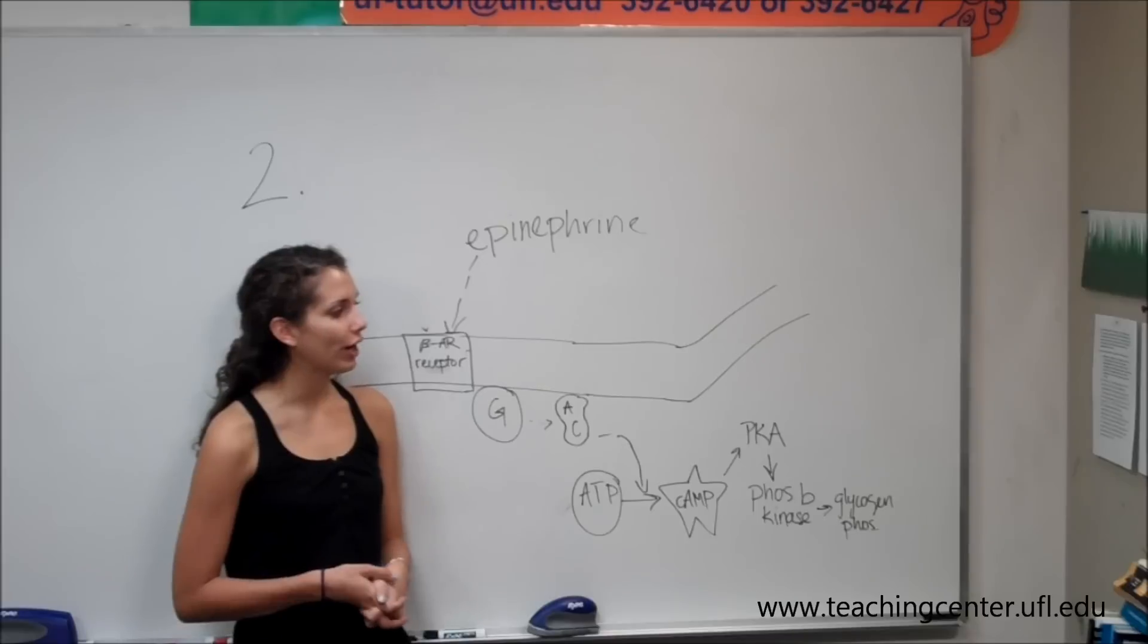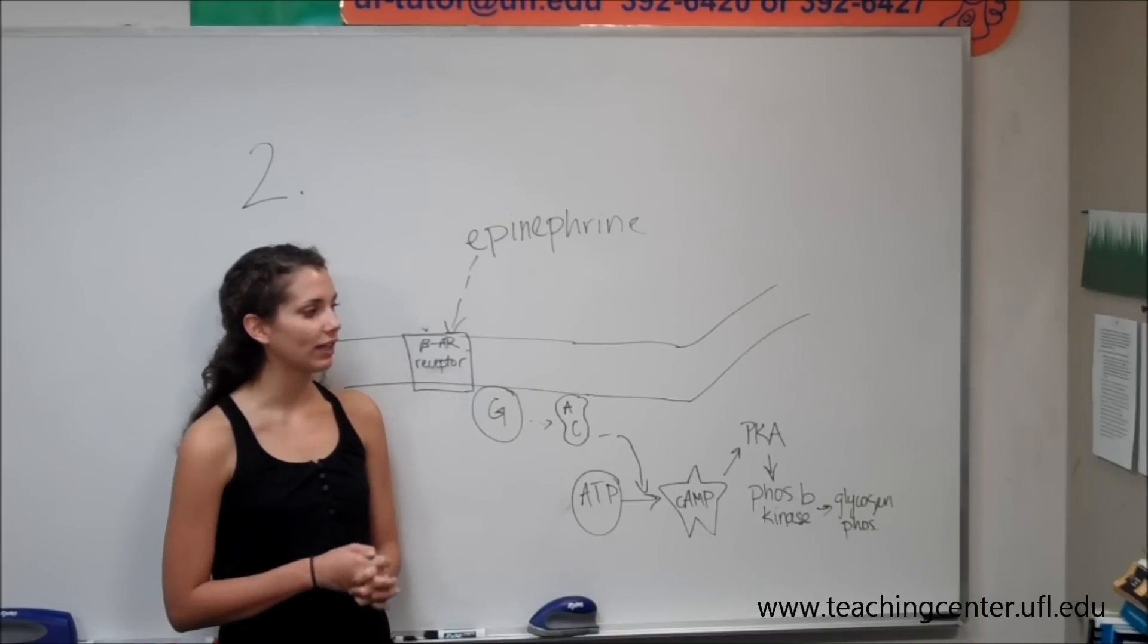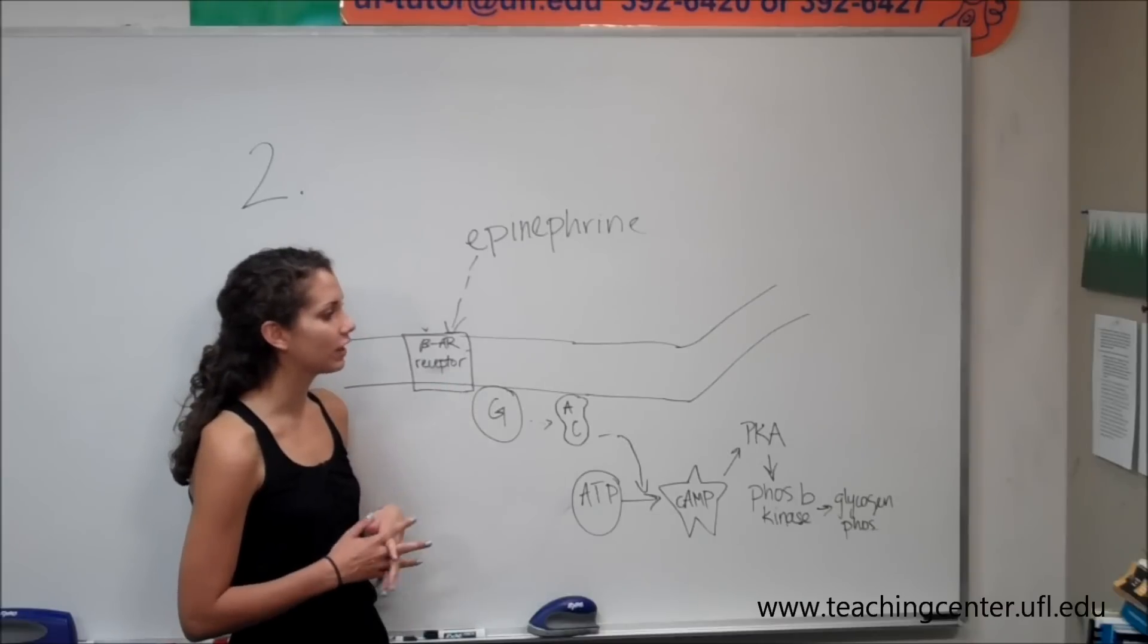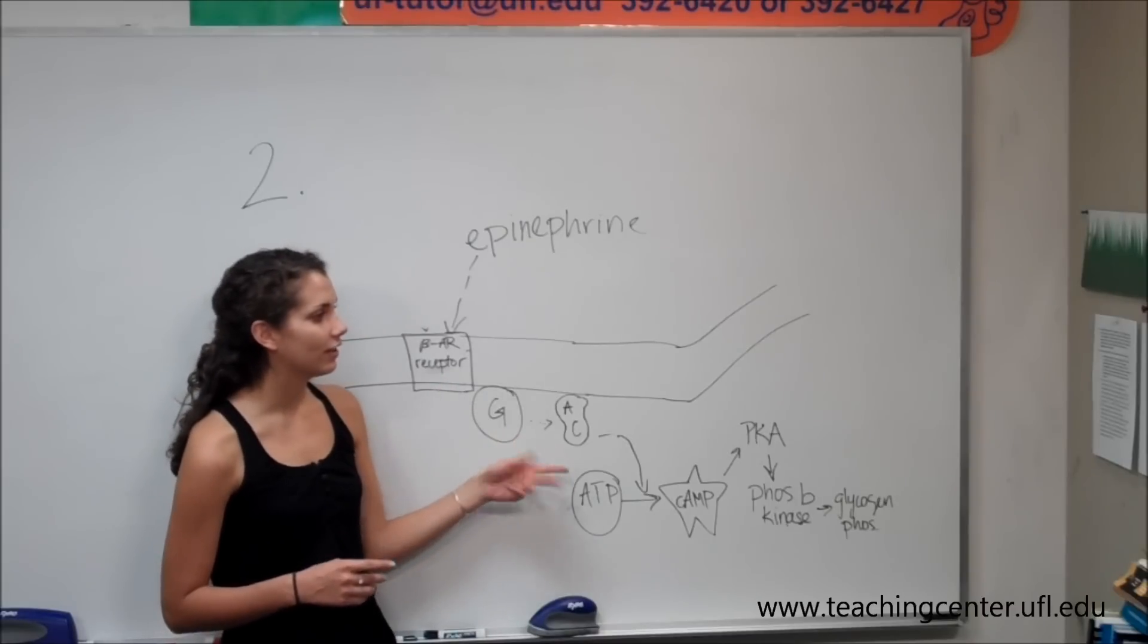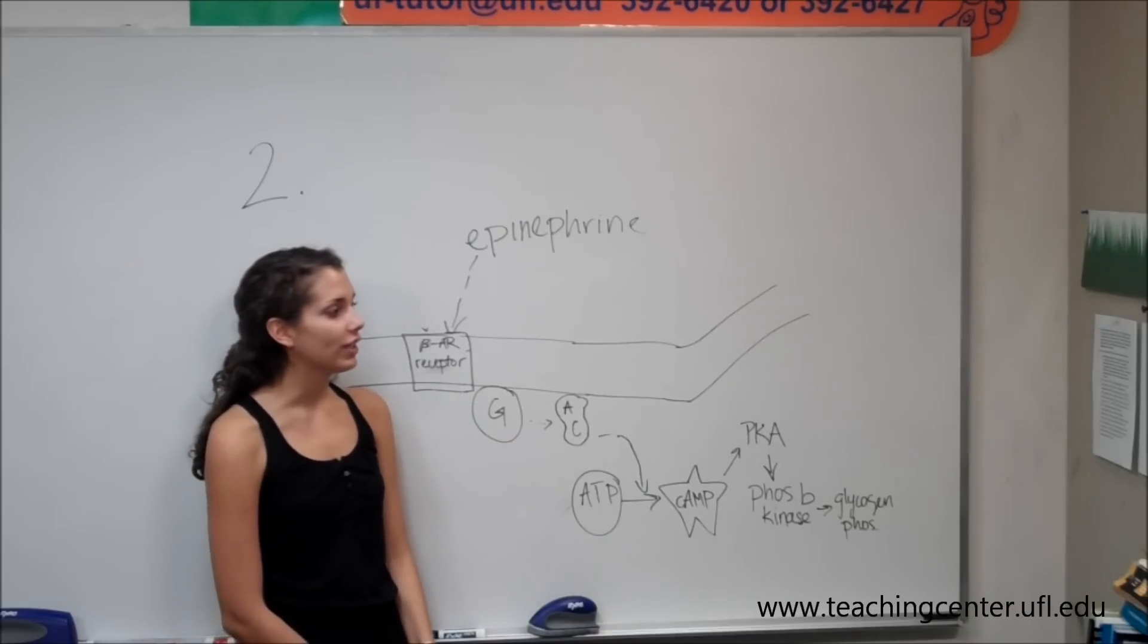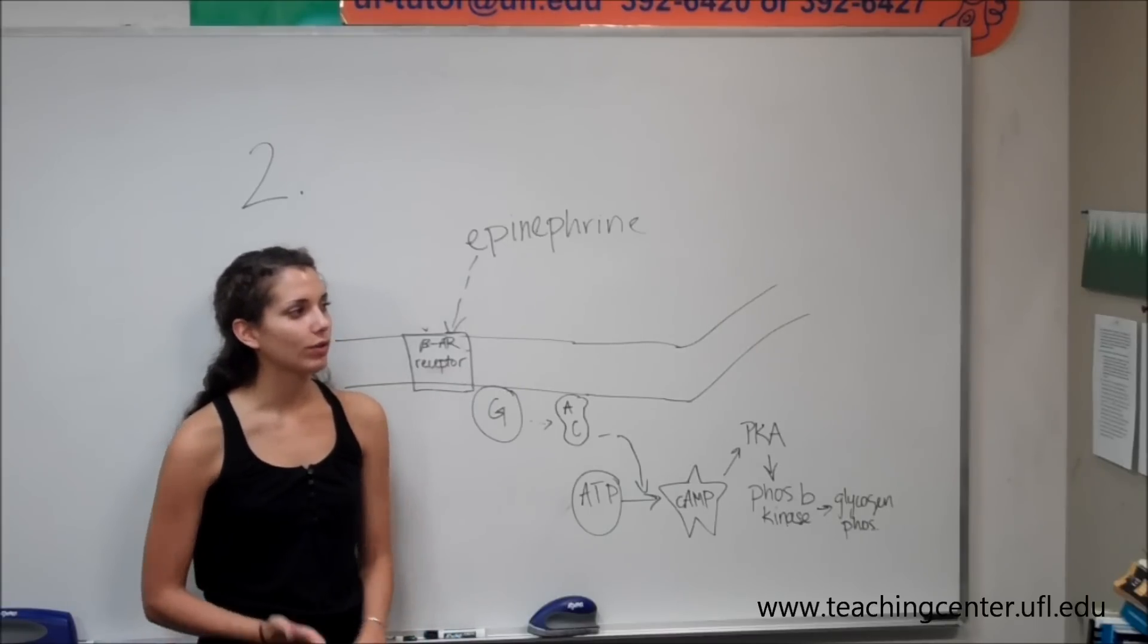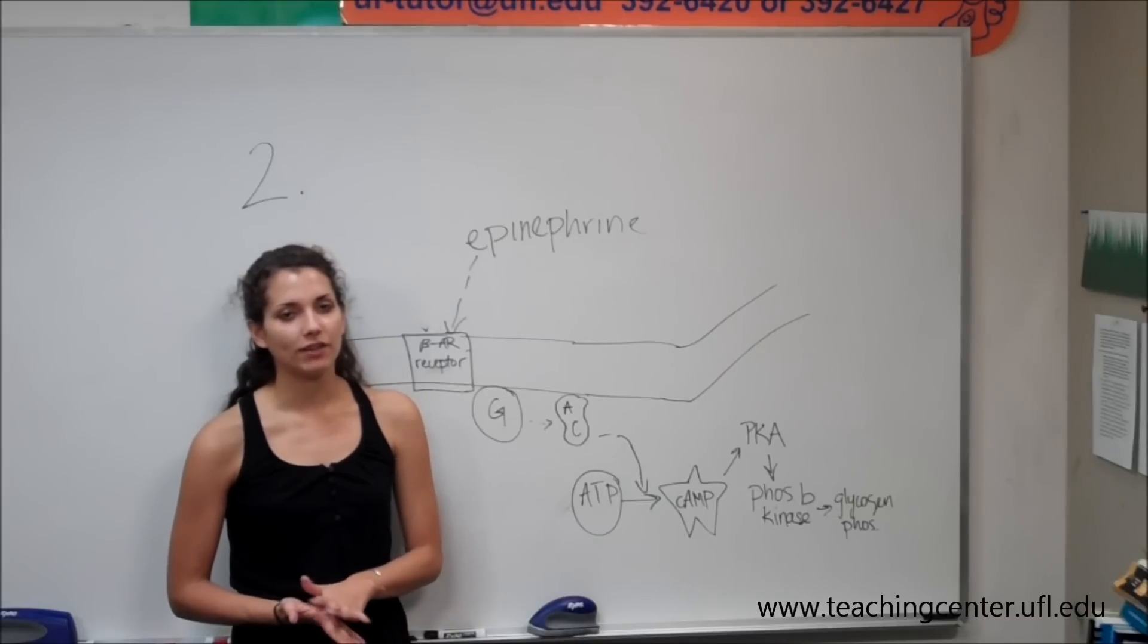So to interpret part A, we know that epinephrine does not directly act on glycogen phosphorylase. Various membrane-bound enzymes are also involved, including adenylyl cyclase and the G protein. So after centrifugation, the cell is no longer intact, so the pathway is interrupted, and phosphorylase activity will not increase even in the presence of epinephrine.